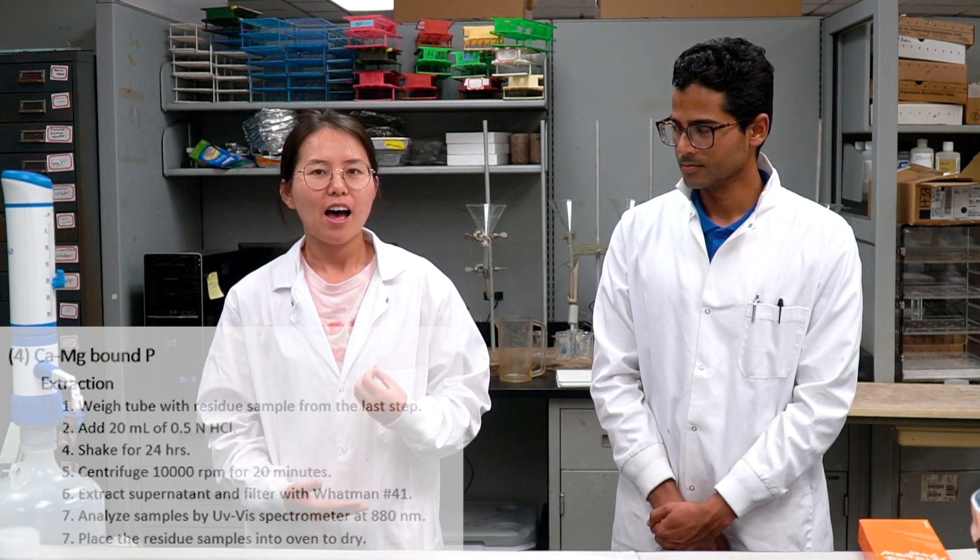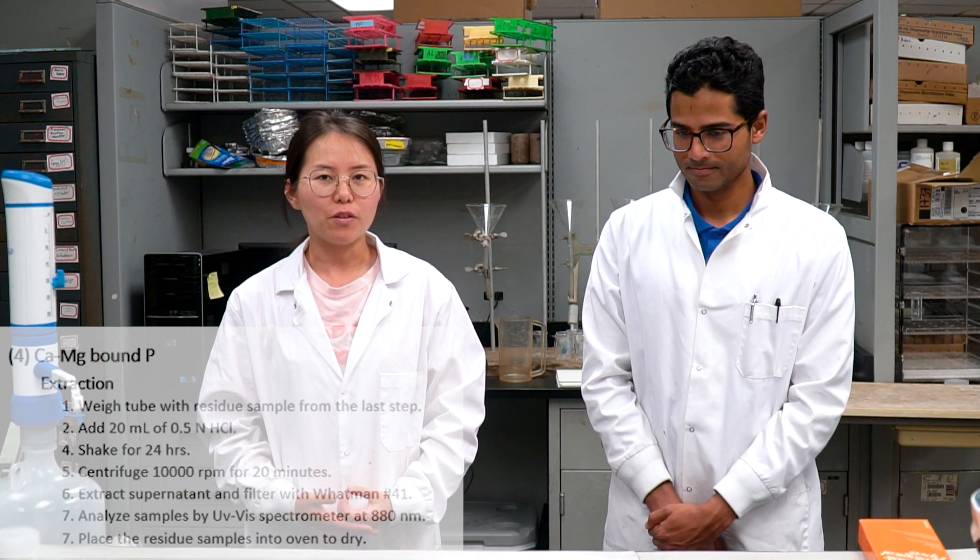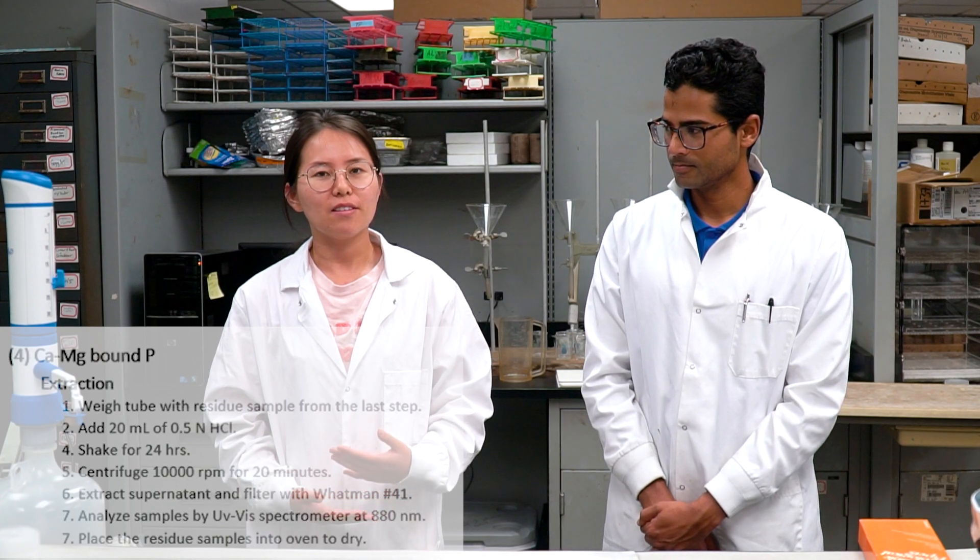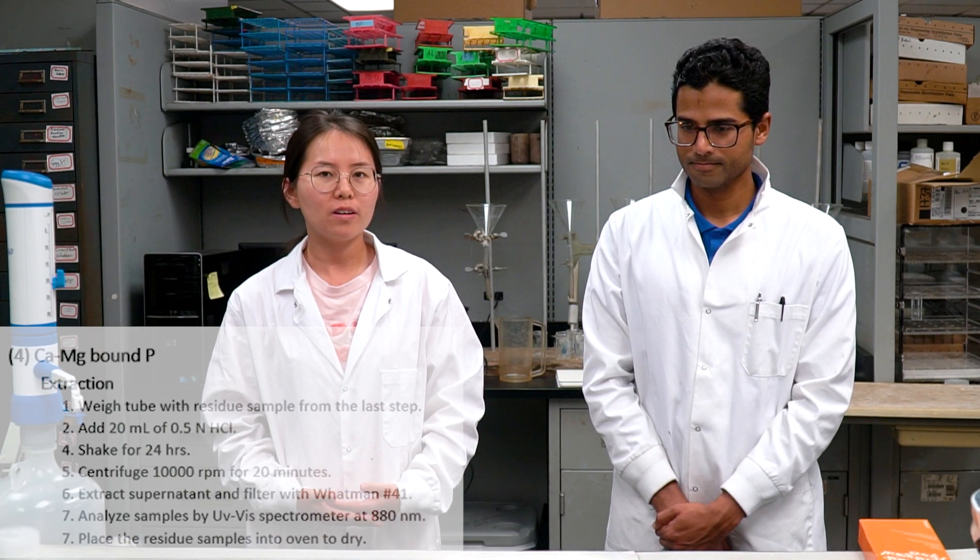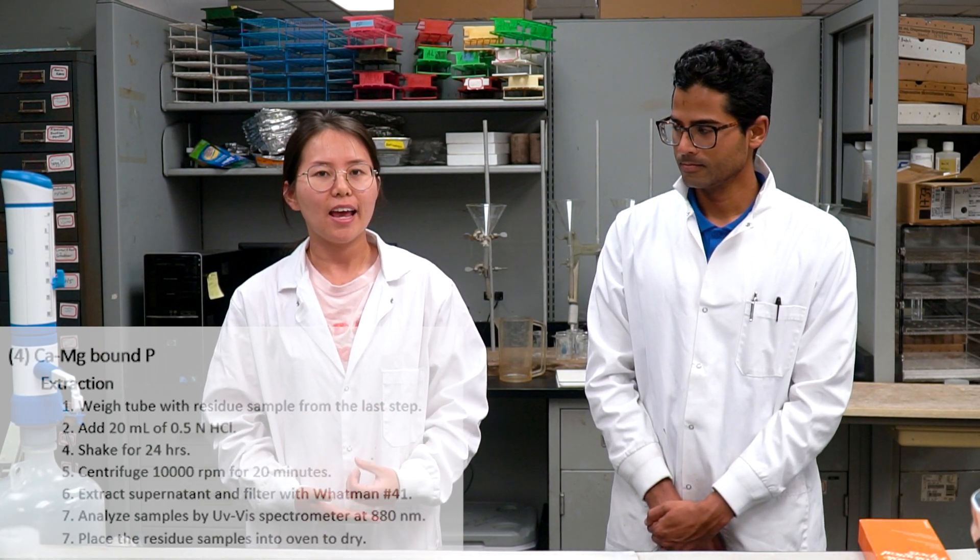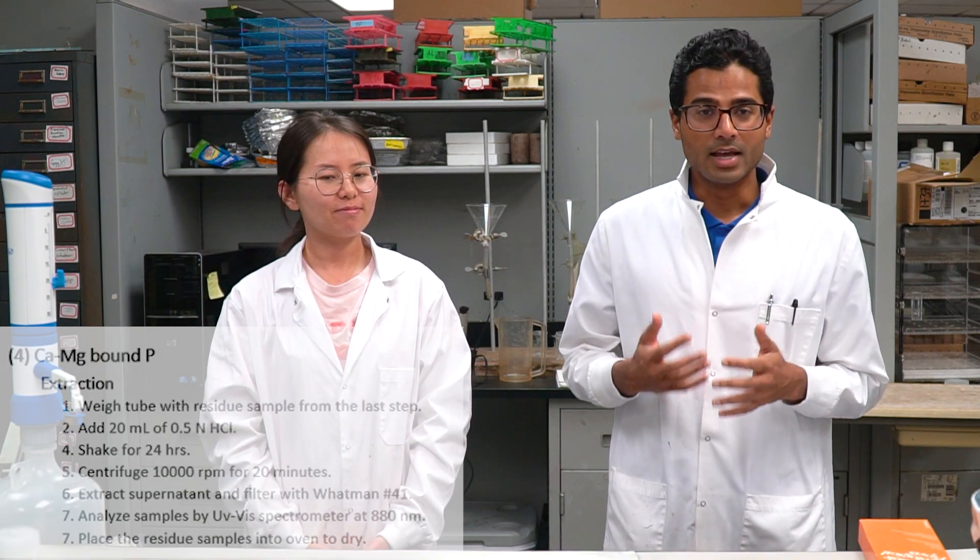After extraction of iron and aluminum phosphorus, the calcium and magnesium is extracted with the solid residue where 0.5 normal hydrochloric acid is used as extractant. For this analysis, we're going to use the same PATOM solution we used in aluminum and iron bound P and also the combined reagent, but this time we will use the freshly prepared combined reagent and for this analysis we will use UV-Vis spectrometer.